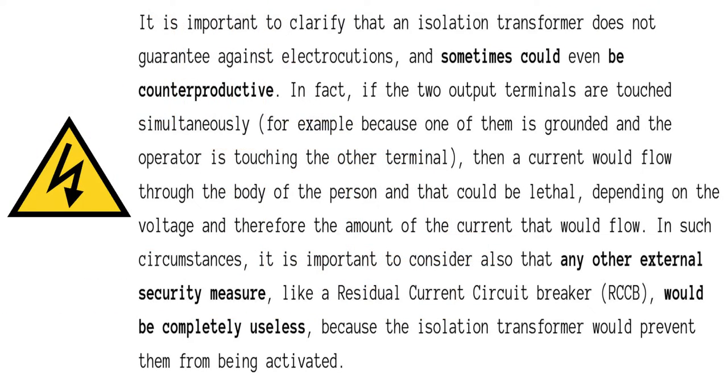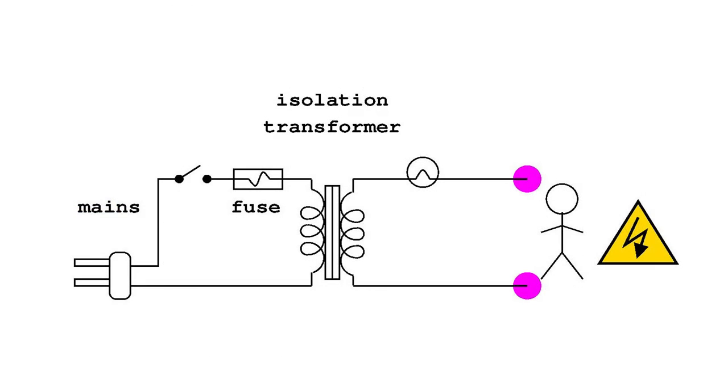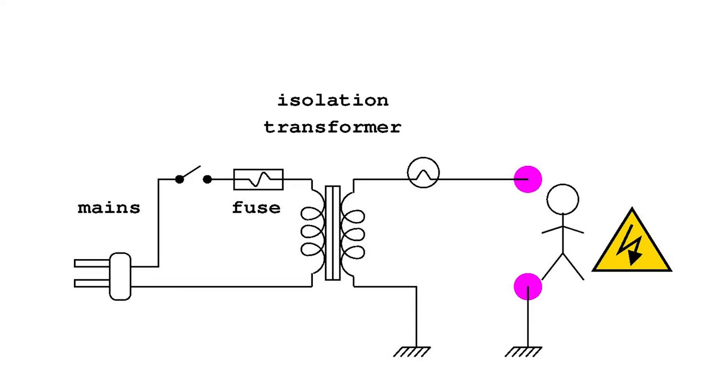However, it is important to clarify that an isolation transformer does not guarantee against electrocutions and sometimes it could even be counterproductive. In fact, if the two output terminals are touched simultaneously, for example because one of them is grounded and the operator is touching the other terminal, then a current would flow through the body of the person and that could be lethal depending on the voltage and therefore the amount of the current that would flow.